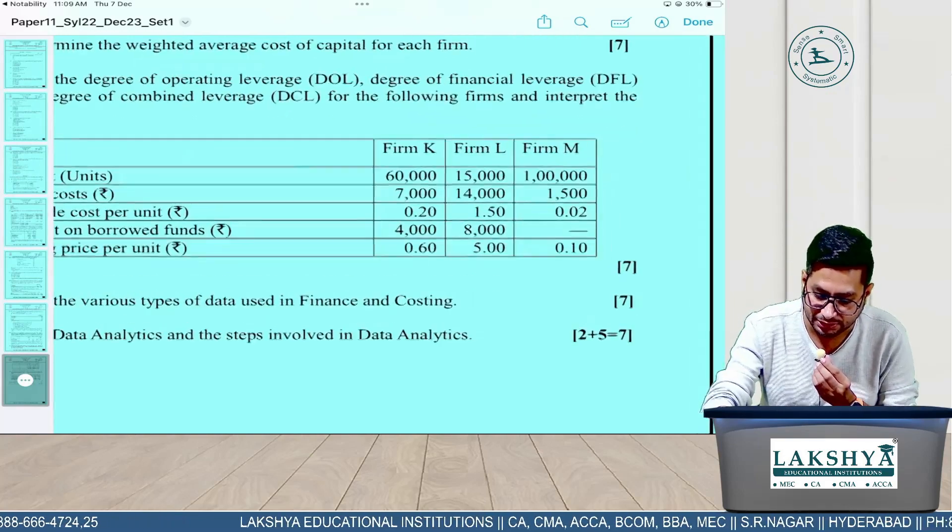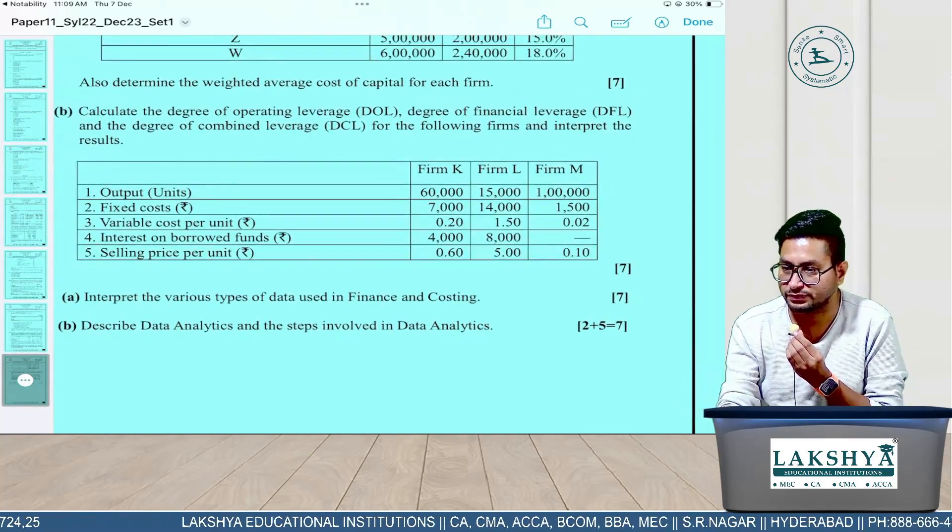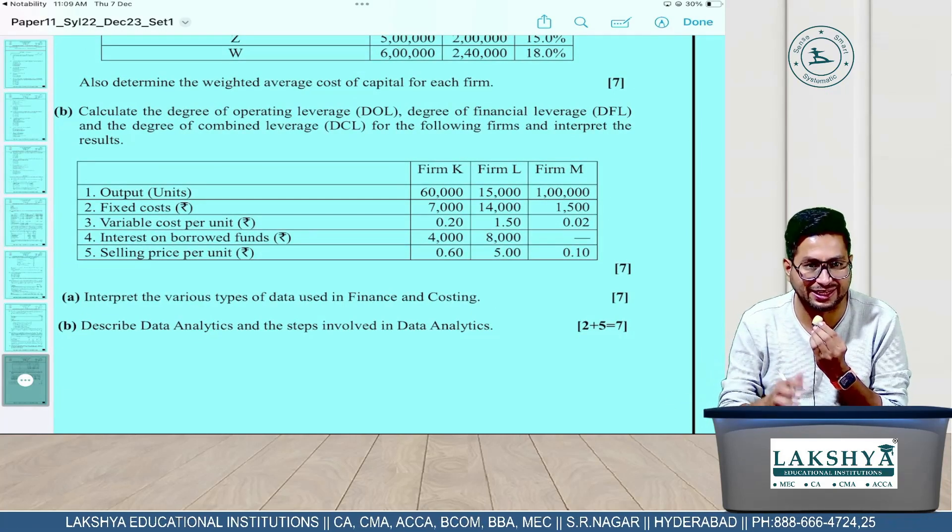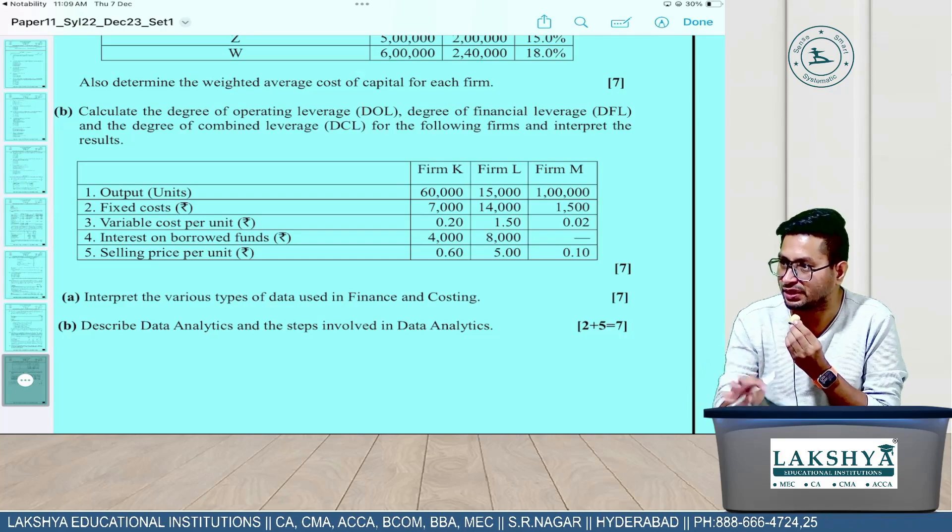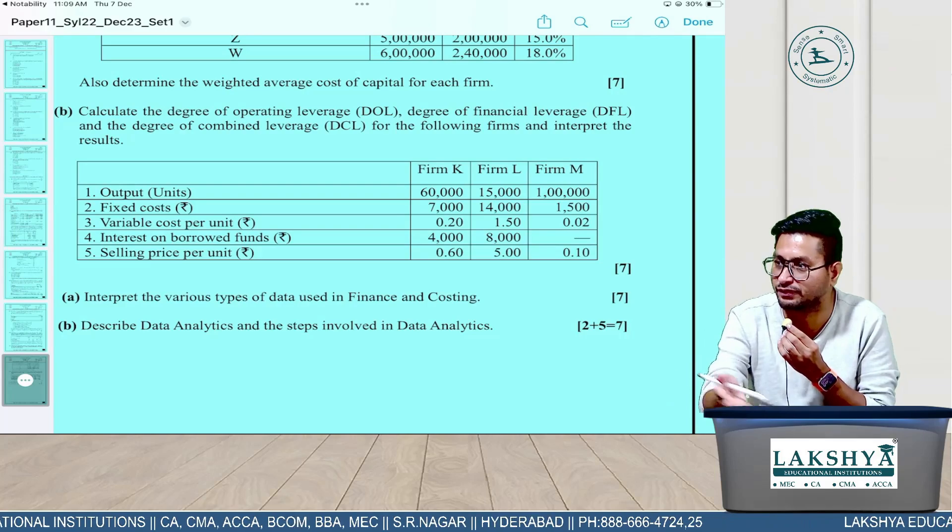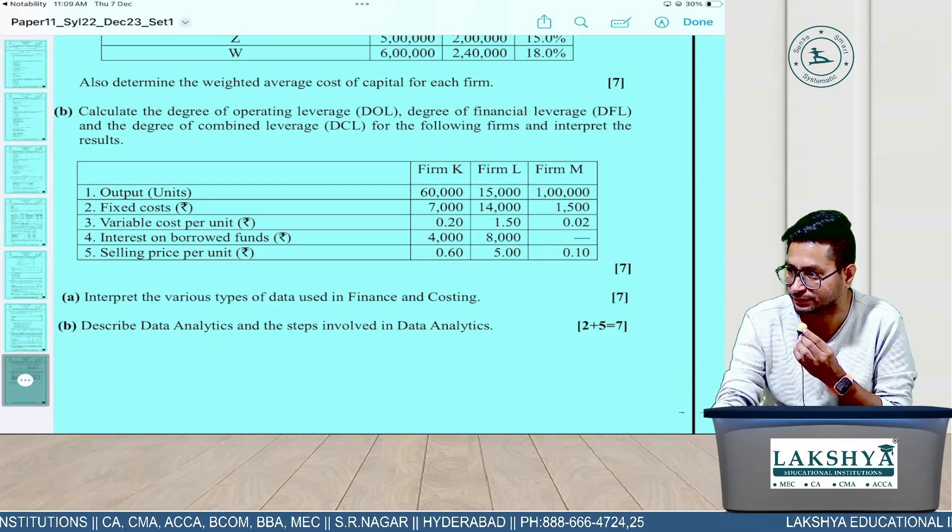Interpret the various types of data used in Finance and Costing. They've given this for seven marks. Only two points, but they've given seven marks. So write the answer with examples in four or five points and you'll get marks 100%. That's the institute's problem that they gave a small question for lengthy marks.